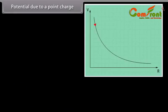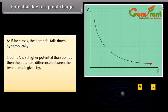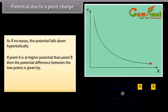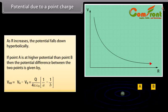We can show in the graph that as R increases, the potential falls down hyperbolically. If point A is at higher potential than point B, then the potential difference between the two points is given by VAB equals VA minus VB. Putting the values of VA and VB, we get VAB equal to Q by 4π ε₀ multiplied by 1 upon A minus 1 upon B.